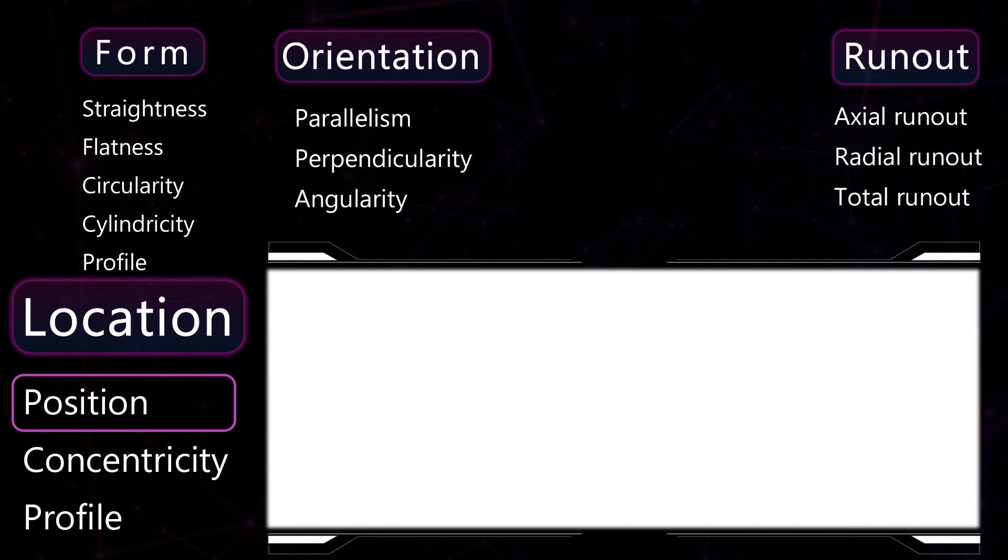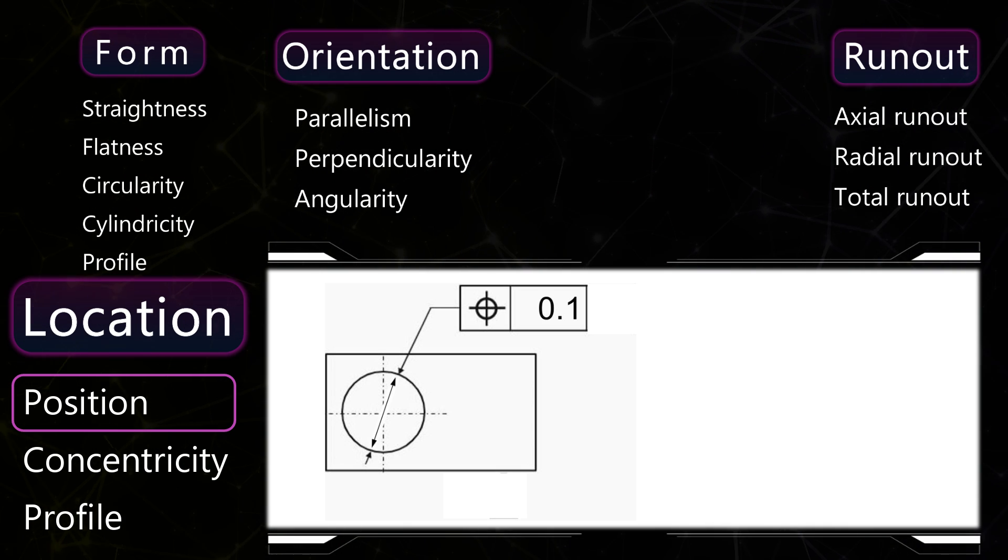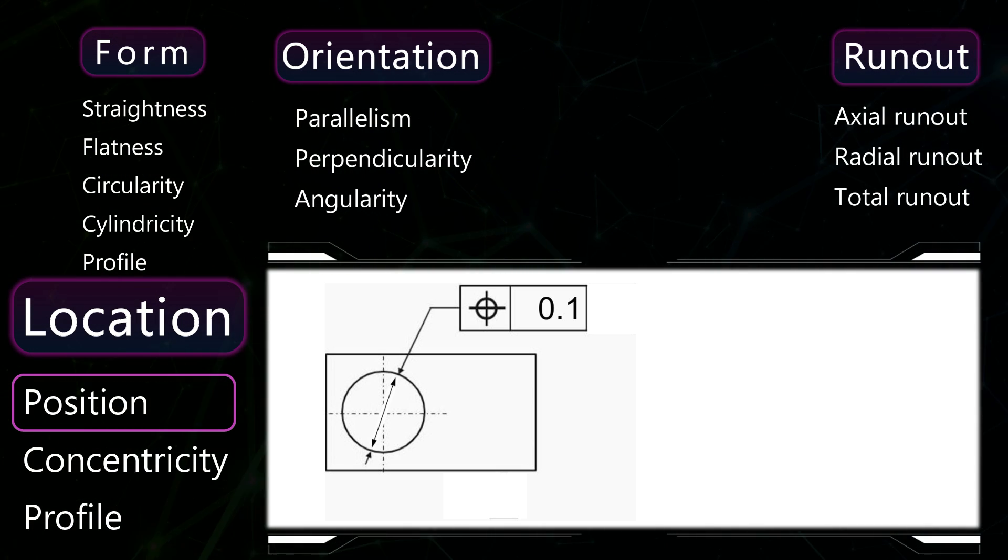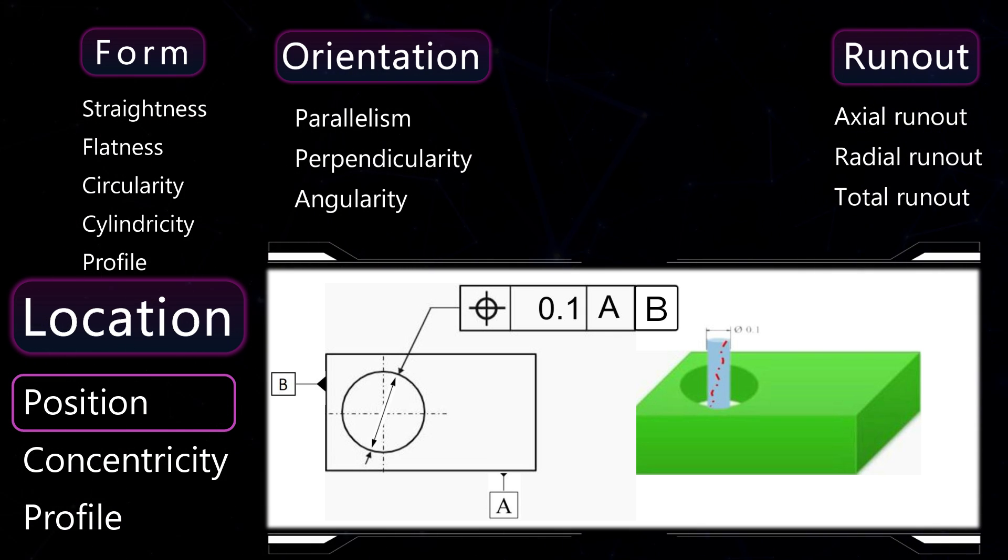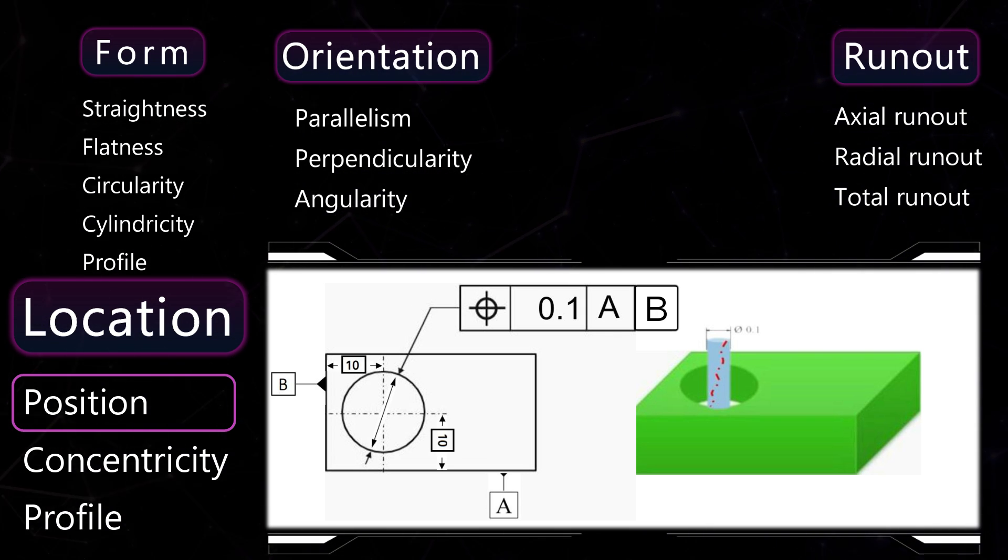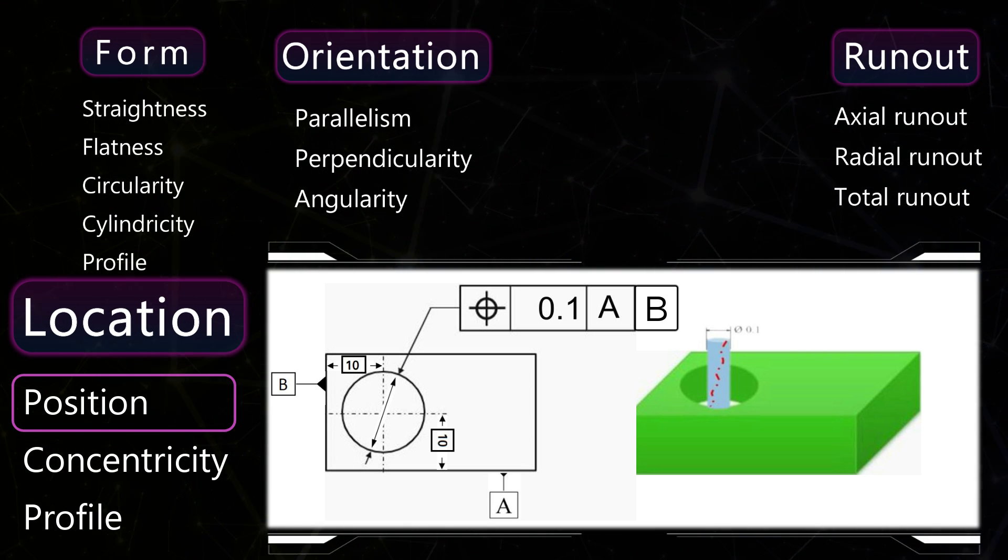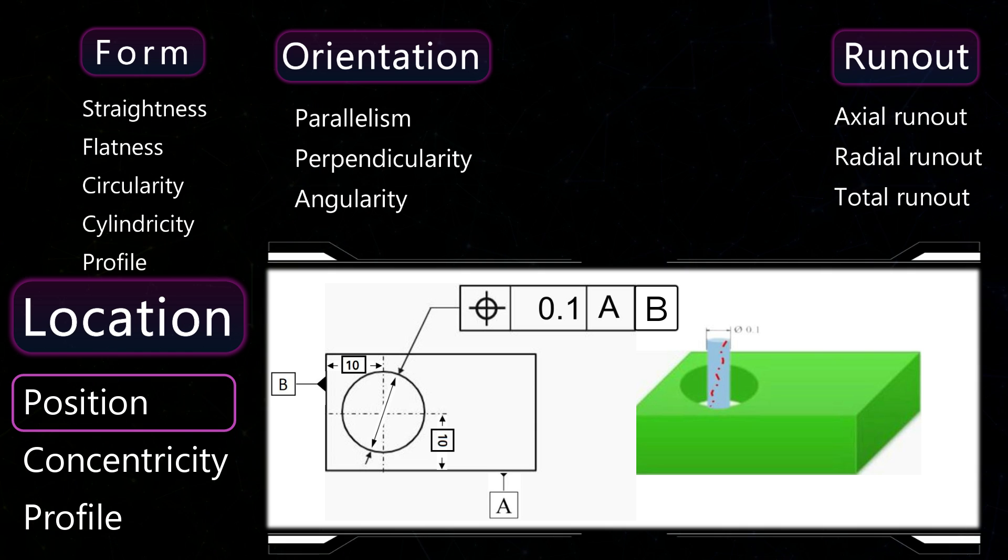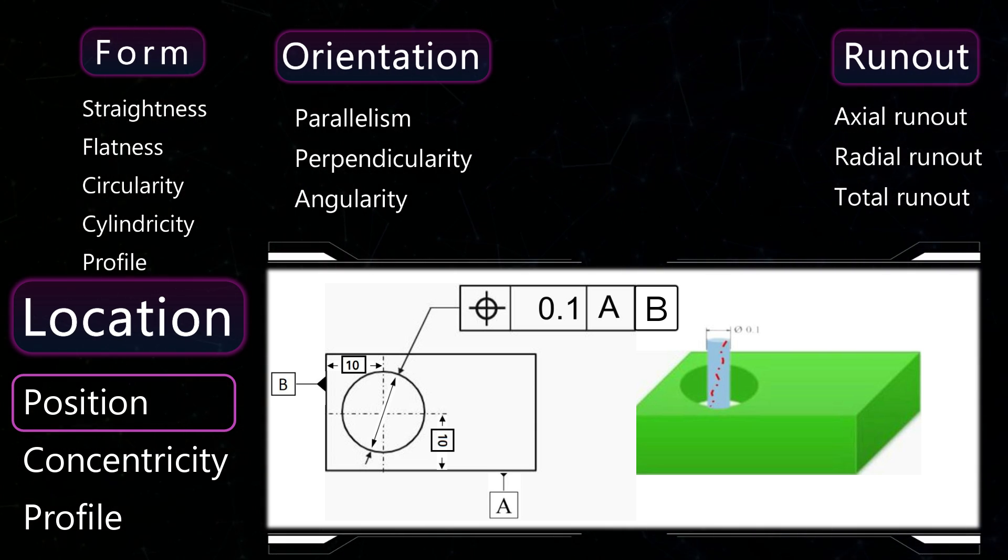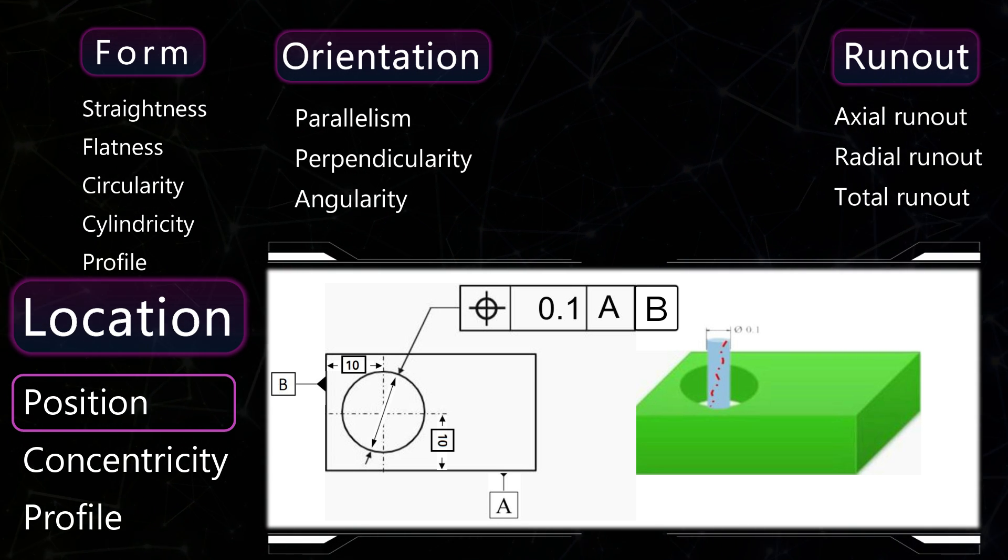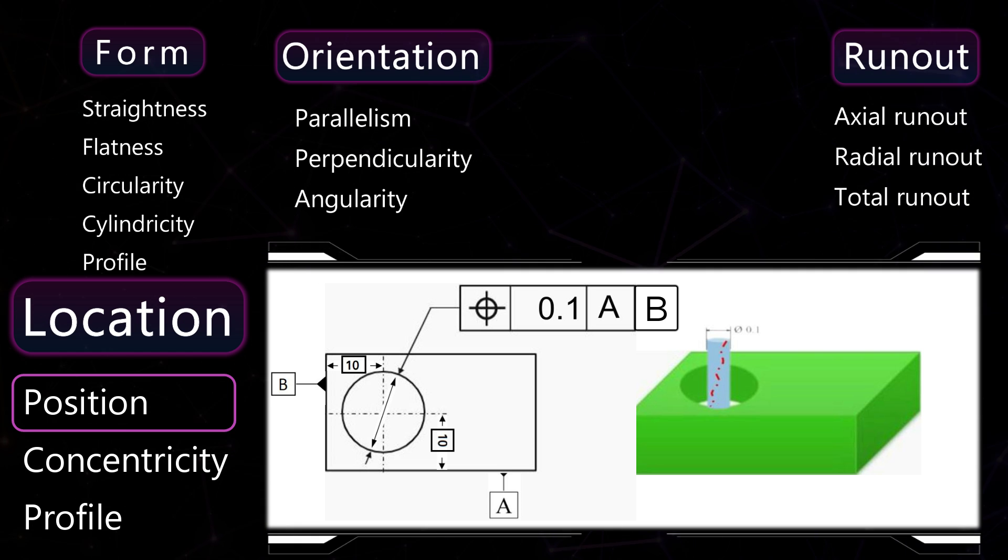Position specifies that the tolerated feature should lie in a tolerance zone which has a certain location in the part with respect to other features. Position needs a datum and theoretical dimensions. So this specification means that the tolerated centerline of the hole should lie inside a tolerance zone which is a circle with diameter of 0.1. The position of the centerline of this circle lies in a distance of 10 to datum A and 10 to datum B.